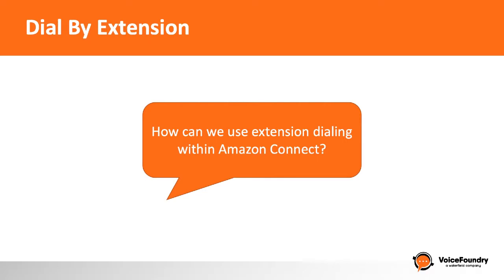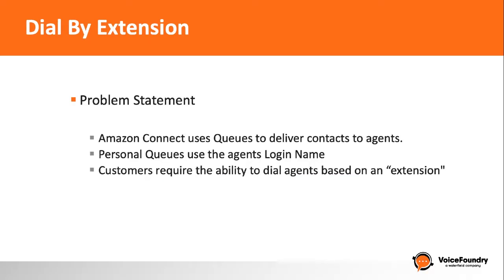First let's have a quick look at the problem statement we're trying to solve for. Natively Amazon Connect doesn't have a notion of extensions. You can't simply press 1-2-3-4 and get connected to an agent. Amazon Connect is based on the concept of queues, and agents belong to queues through their routing profiles.